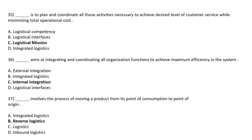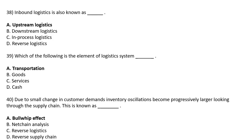DASH involves the process of moving a product from its points of consumption to points of origin — Option A: Integrated Logistic, Option B: Reverse Logistic, Option C: Logistic, Option D: Inbound Logistic. The correct answer is Option B: Reverse Logistic. Option A: Upstream Logistic, Option B: Downstream Logistic, Option C: In Process Logistic, Option D: Reverse Logistic. The correct answer is Option A: Upstream Logistic.